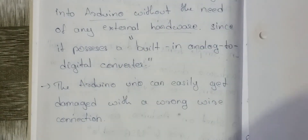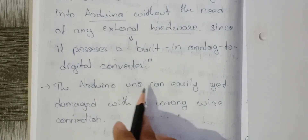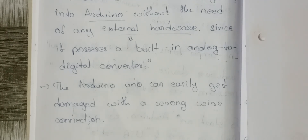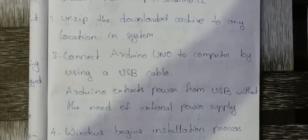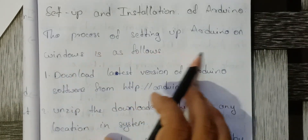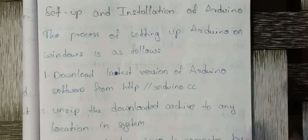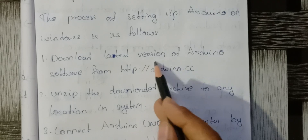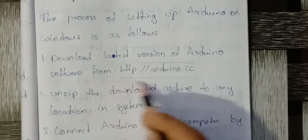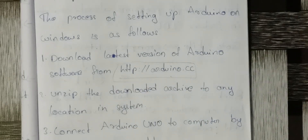The Arduino can easily get damaged with a wrong wire connection, so we have to be very careful. Regarding setup and installation on Windows: download the latest version of the Arduino software from http://arduino.cc — this is the official website — and download the Arduino IDE.